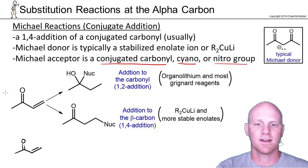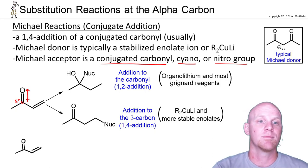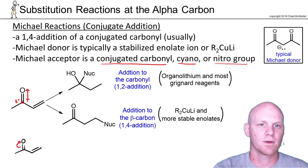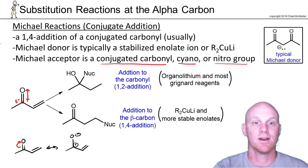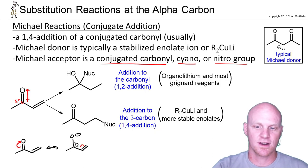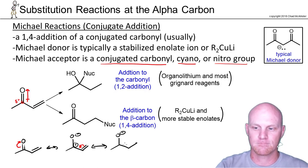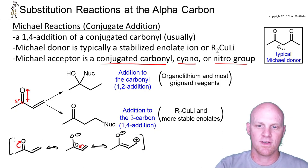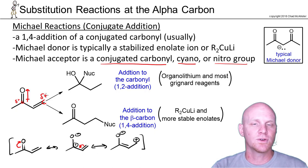If we have this conjugated system, the carbon adjacent to the carbonyl has a partial positive charge — a big dipole moment — making it electrophilic. We can also look at this from a resonance perspective: kicking electrons up to the minor resonance contributor shows a partial positive charge on the carbonyl carbon. With the conjugated system, there's one additional resonance structure, which gives us a partial positive charge on the beta carbon as well. Whether a nucleophile attacks the carbonyl or the beta carbon depends on the nature of that nucleophile.